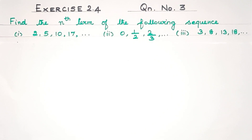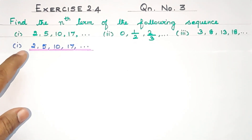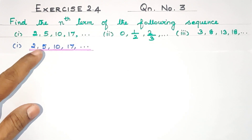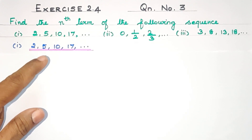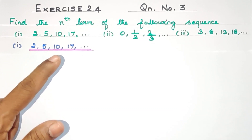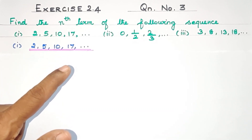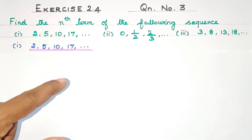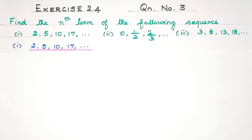So we will solve one sequence. The first sequence is 2, 5, 10, 17, and so on. Here 2 is the first term — A1. 5 is the second term — A2. 10 is the third term — A3. 17 is the fourth term — A4. We have to find out the nth term, that is, we have to find out An.